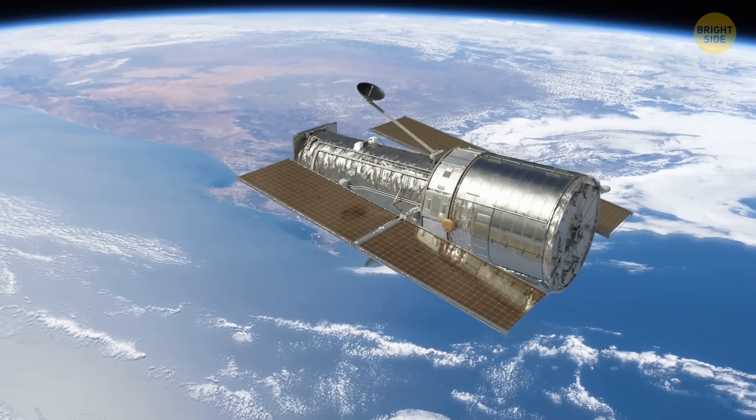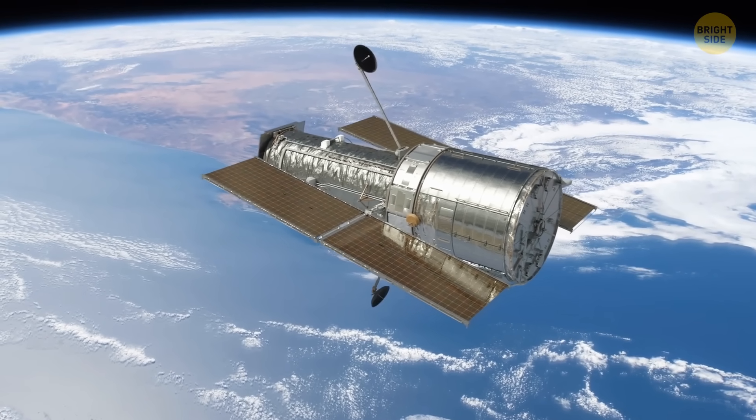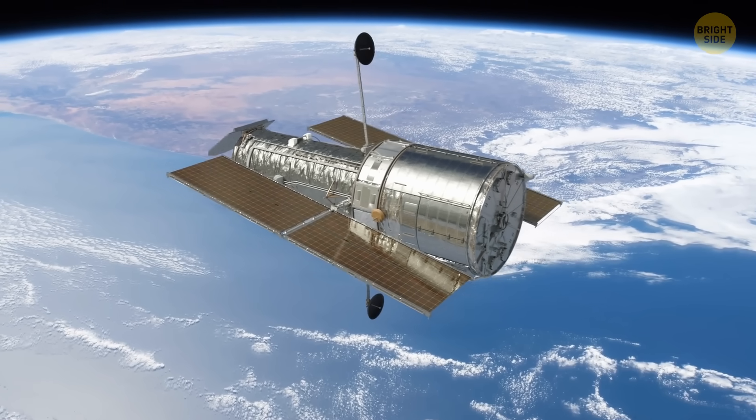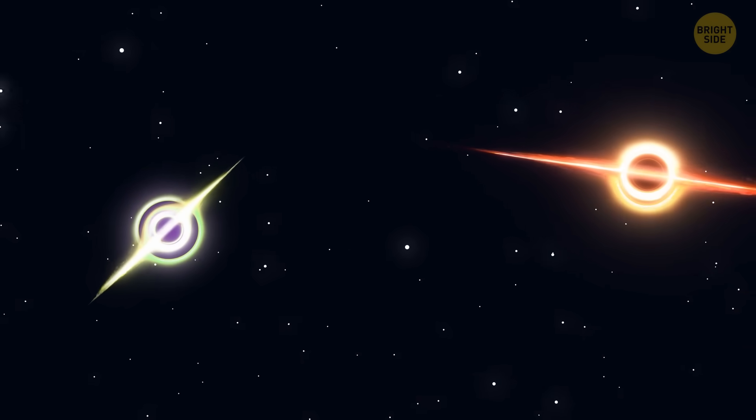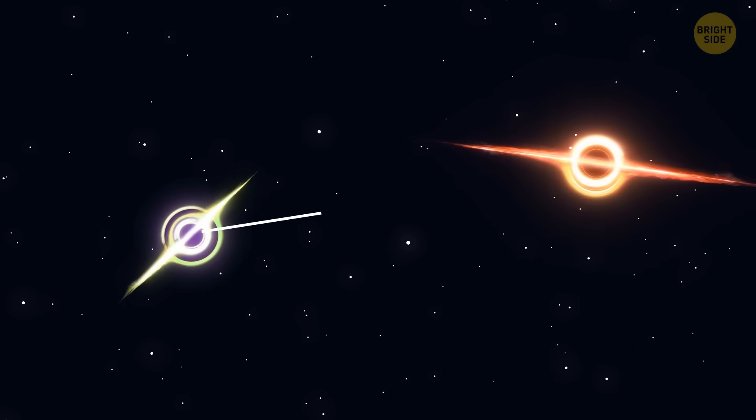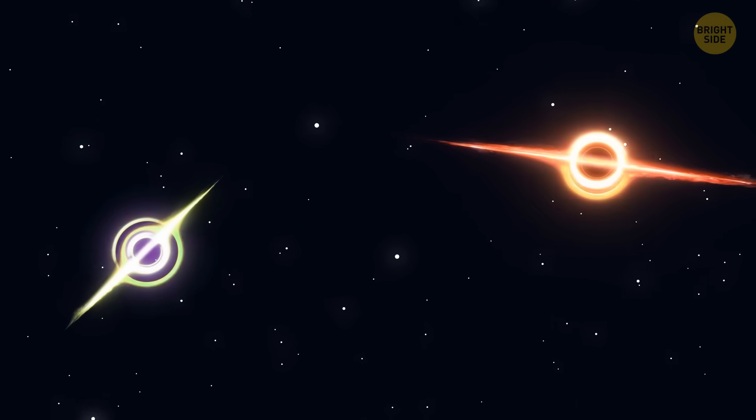Scientists have been observing these black holes across multiple wavelengths of light, and have come to the conclusion that they are kind of unique. They're located the closest to each other astronomers have ever seen. The distance between them is a mere 750 light years, which, astronomically speaking, is just next door.